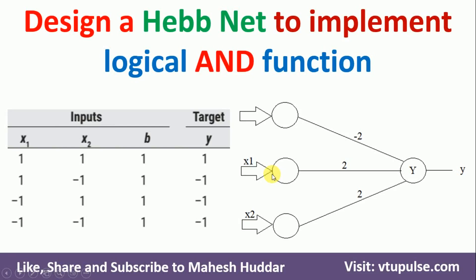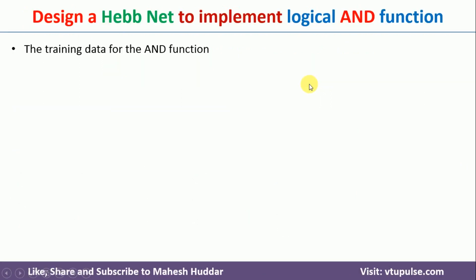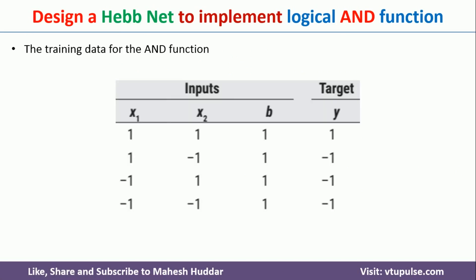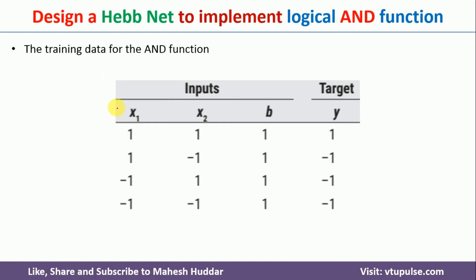Welcome back. In this video, I will discuss how to design a Hebb network to implement the logical AND function with the help of the Hebb rule. The training data for the AND function looks something like this. X1 and X2 are the two inputs, B is the bias, and Y is the target.